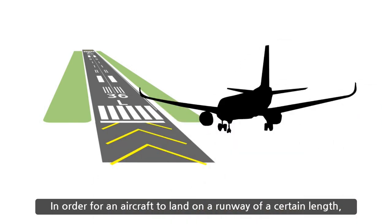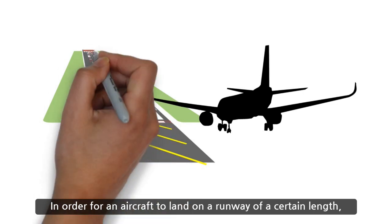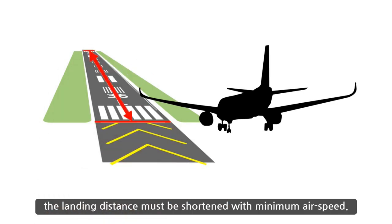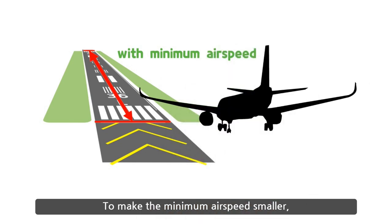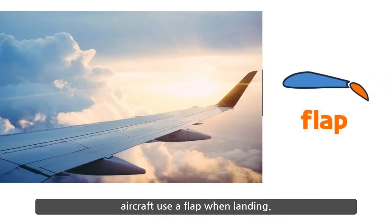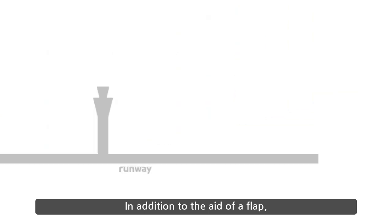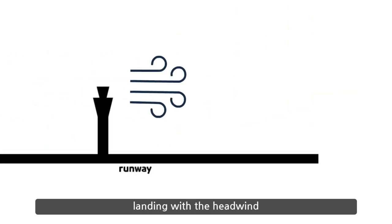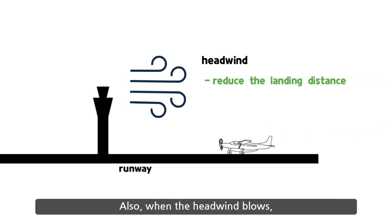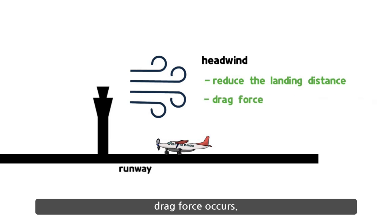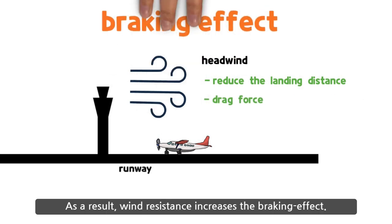In order for an aircraft to land on a runway of a certain length, the landing distance must be shortened with minimum air speed. To reduce minimum air speed, aircraft use flaps when landing. In addition to the aid of flaps, landing with a headwind gives aircraft more lift to reduce the landing distance. Also, when the headwind blows, drag force occurs, and wind resistance increases the braking effect.